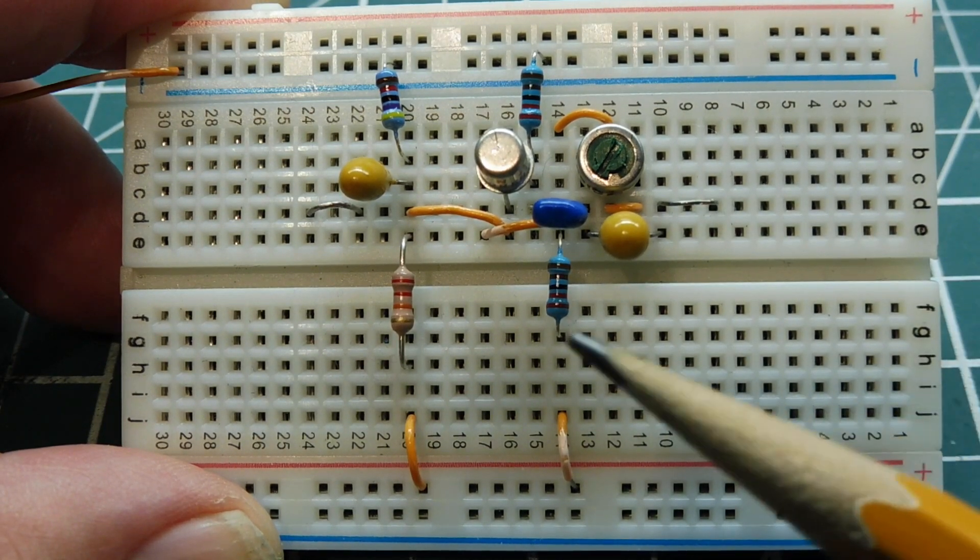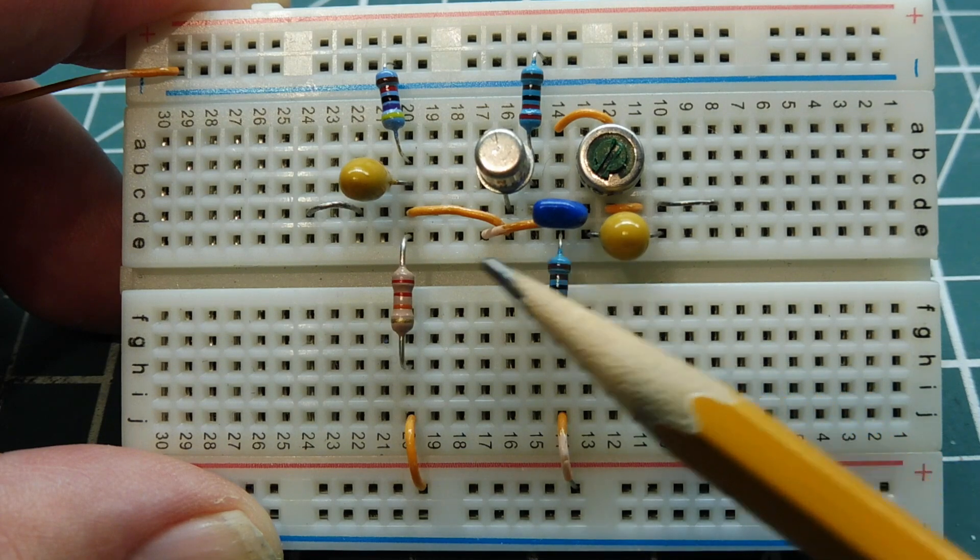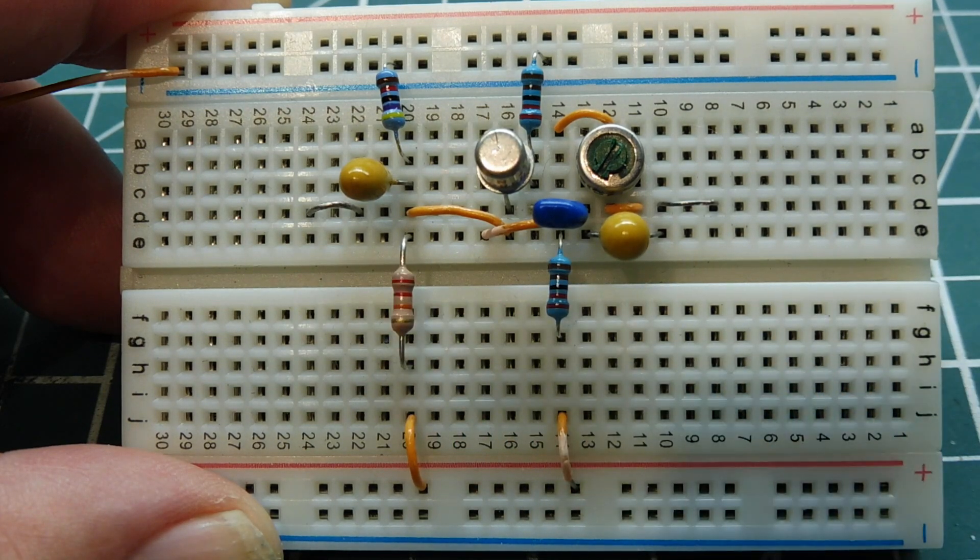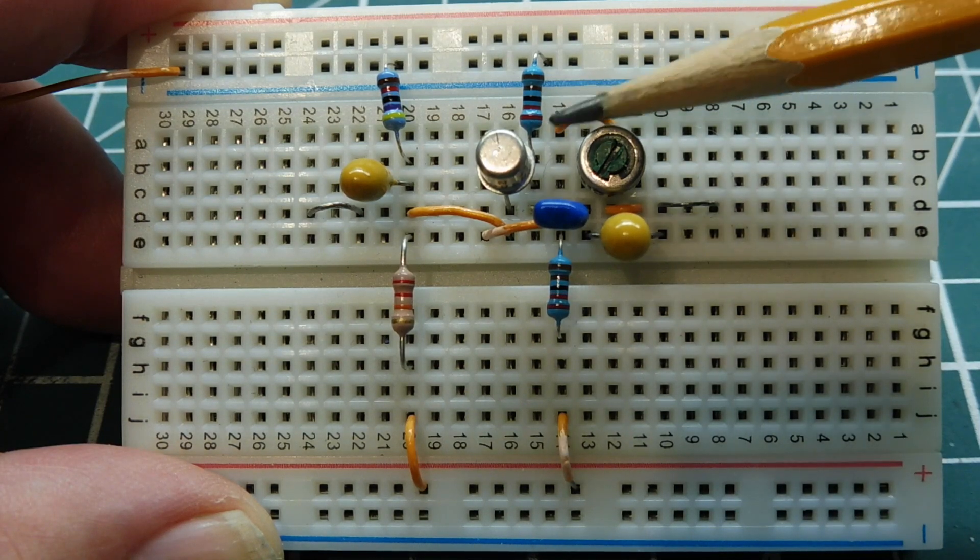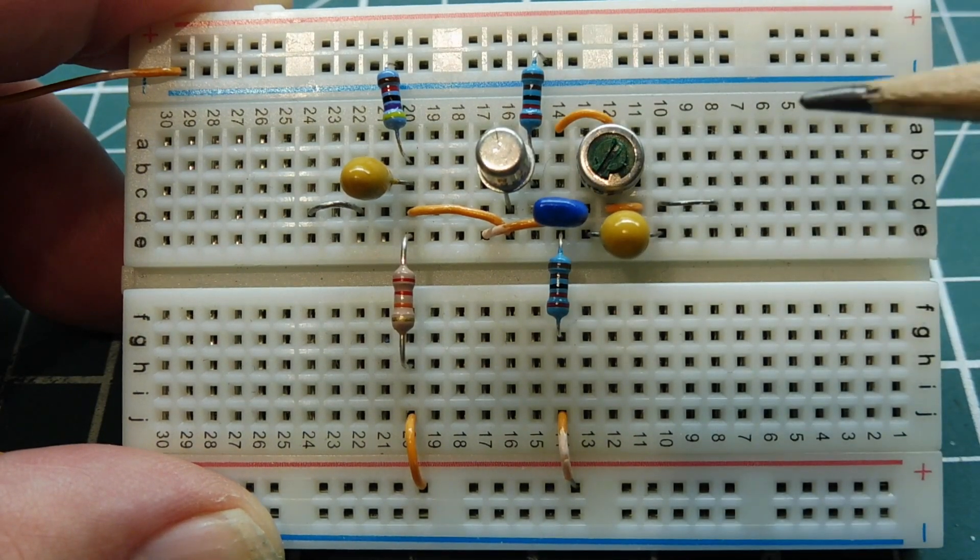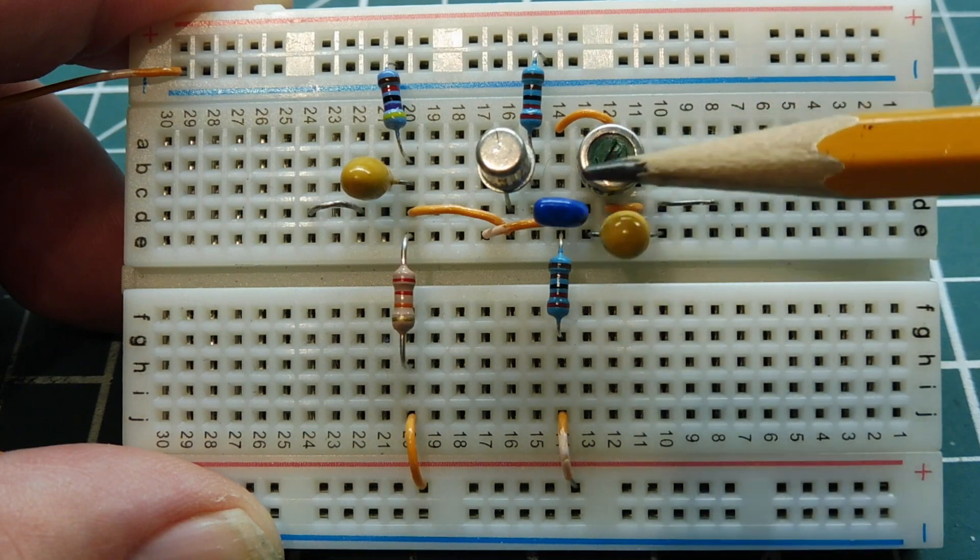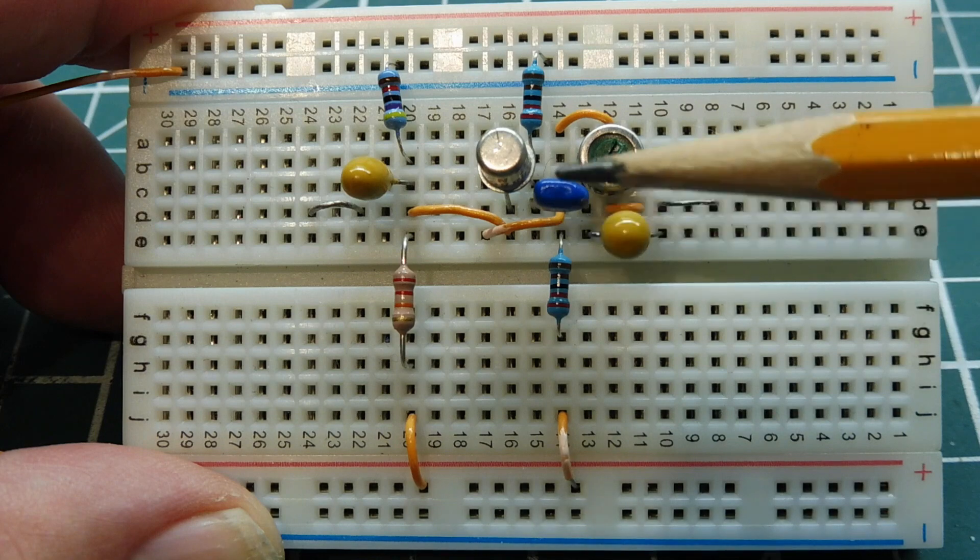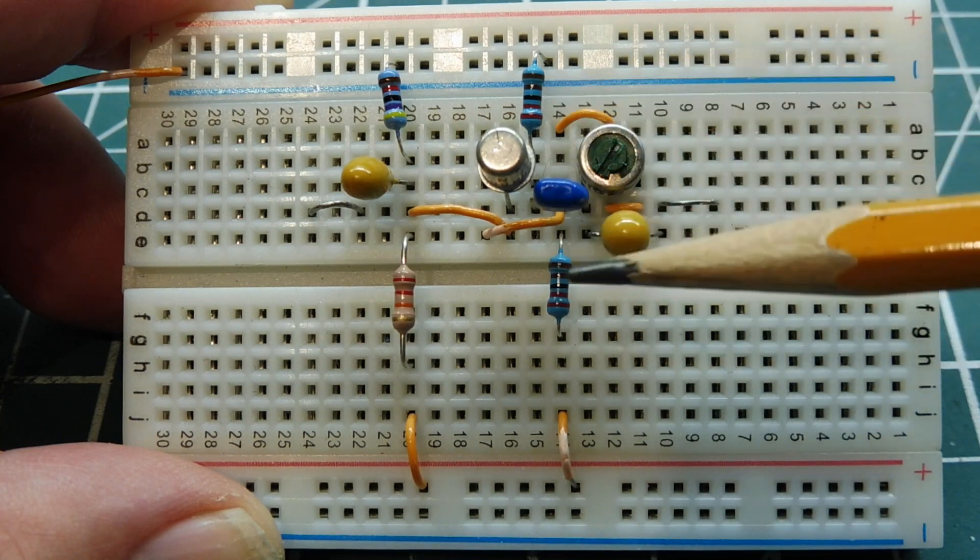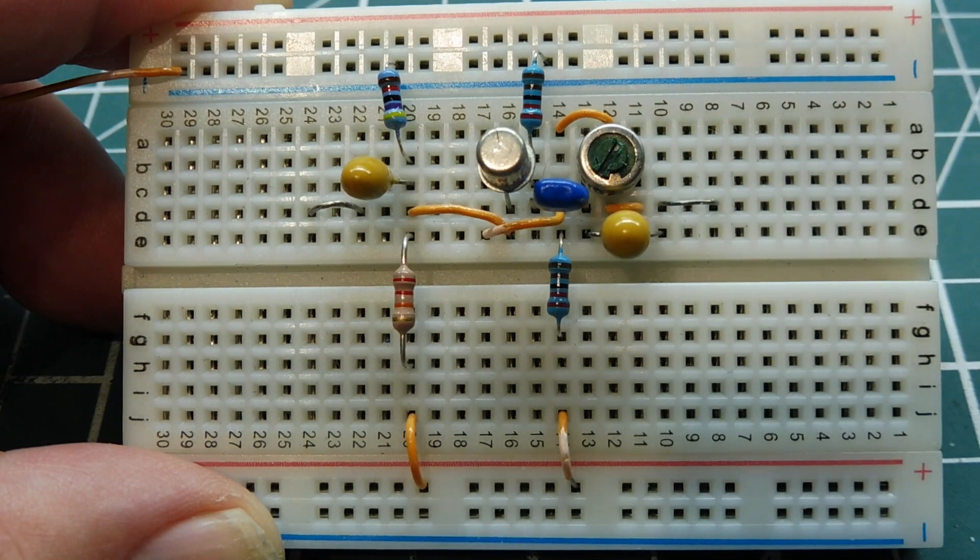If we take the signal off the emitter resistor, it will be in phase with the input. And if we take the signal off the collector resistor, the load resistor, the signal will be 180 degrees from the input. So if we combine them with this pot, this potentiometer and this capacitor, by combining the signal from zero degrees to 180, we can go anywhere in between for our output. That's how the circuit works.